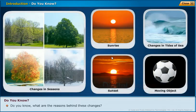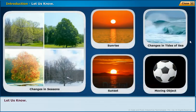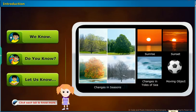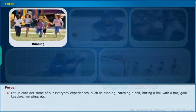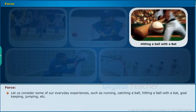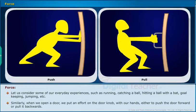Do you know what are the reasons behind these changes? How can we decide whether an object is moving faster than the other? Let's find out the answers to these questions in this chapter. Let us consider some of our everyday experiences such as running, catching a ball, hitting a ball with a bat, goalkeeping, jumping, etc.